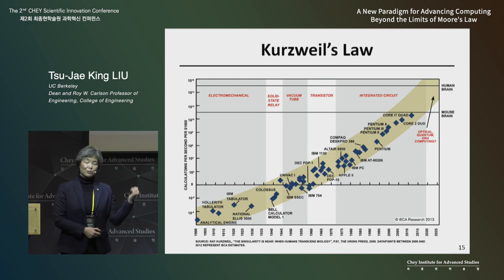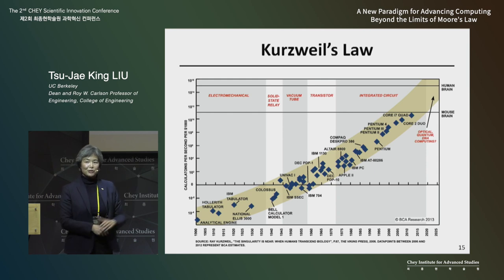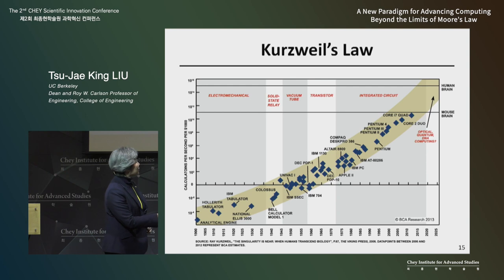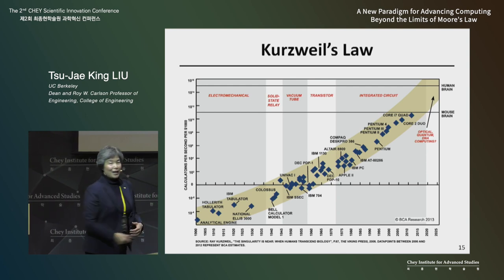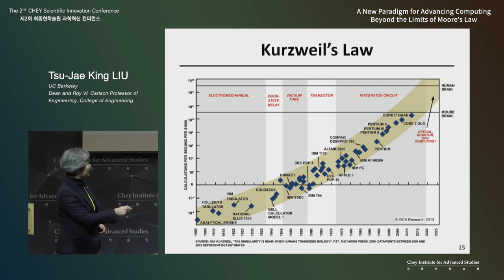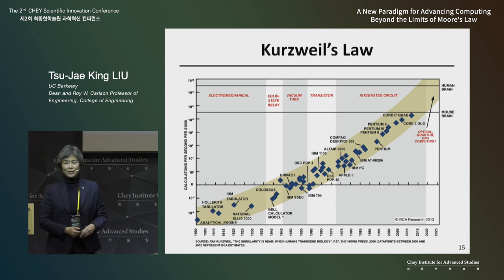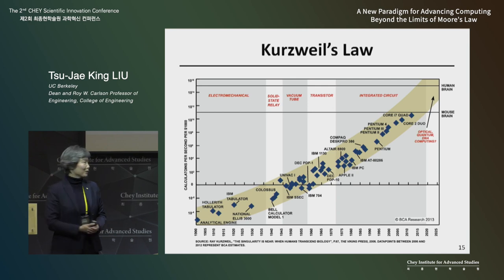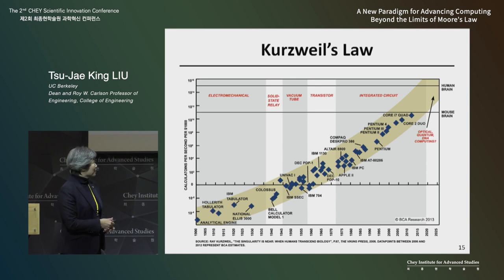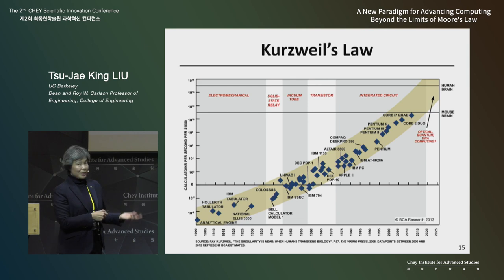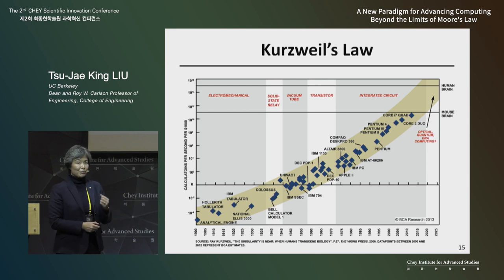Interestingly, the human brain has some computational capability, and people expect someday computing devices can be more capable than the human brain. The other thing I wanted to point out here is that over the last century, more than one century, the kind of switching devices were actually different and were changing.